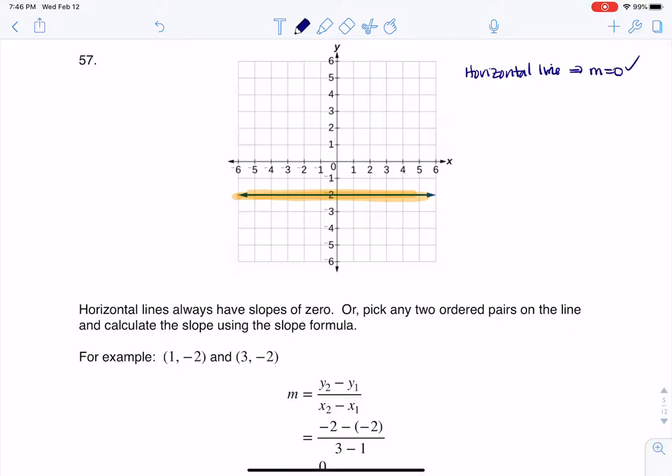But let's say you didn't. You're like, I don't remember that. Well, let me show you what you can do. You can pick any two points you want on this line. I'm going to pick these two: (1, negative 2) and (3, negative 2). And again, it doesn't matter what you pick, but I'm just going to pick those two because it'll match my work.